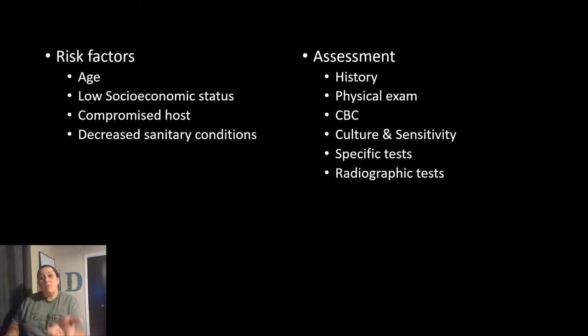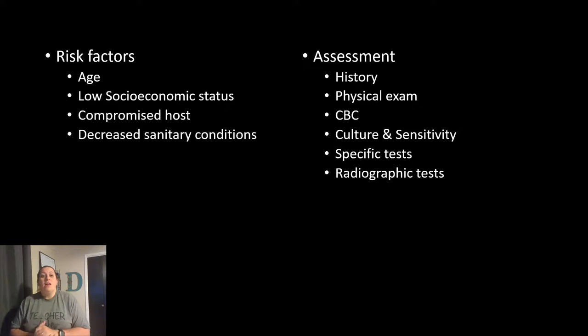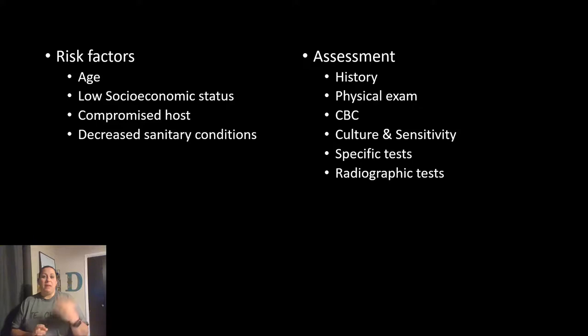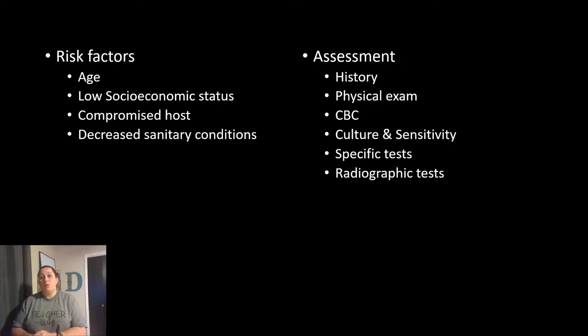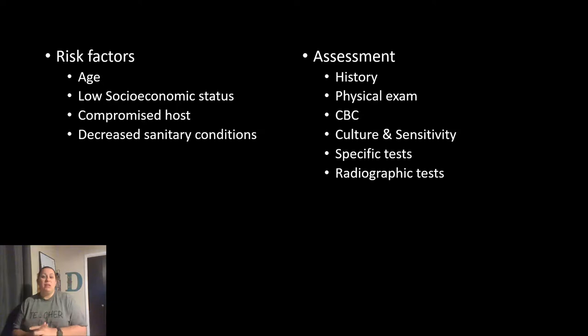Risk factors for developing infections include age — young people have immune systems not ready to fight, and older people have immune systems that are tired of fighting. Low socioeconomic status is another factor, as it limits access to good food, clean water, and good hygiene. It can also affect access to good healthcare. A compromised host has a higher chance of infection, and decreased sanitary conditions — like not washing hands or poor hygiene — increase risk.